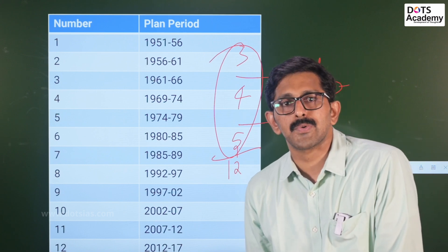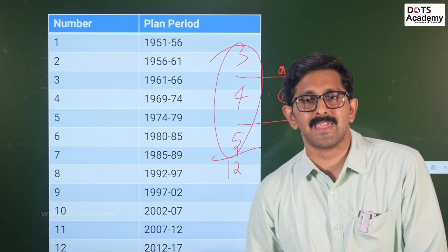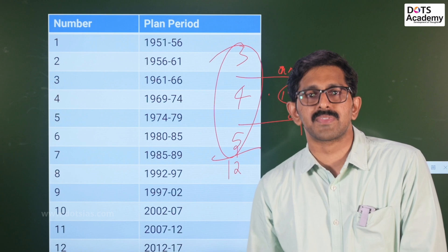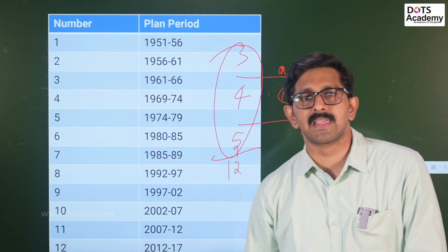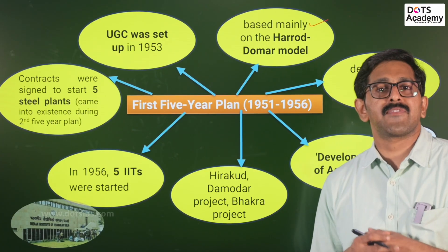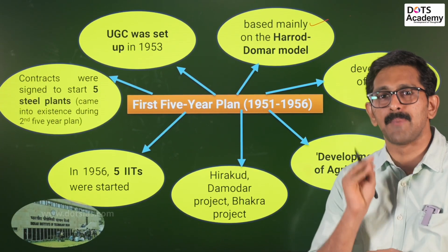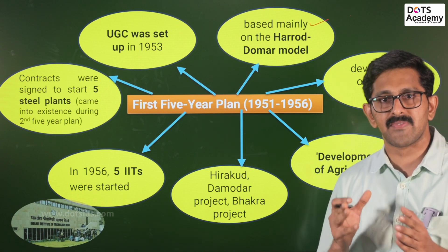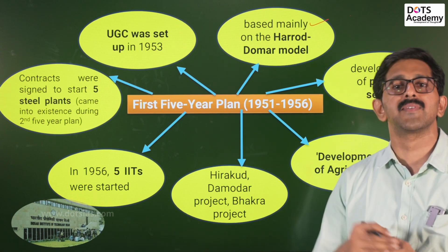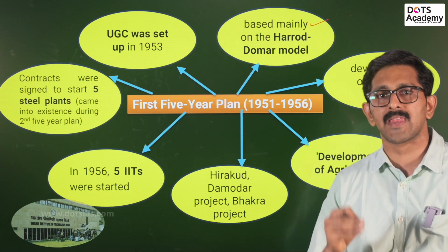From 1992 to 2017 is a chronological period to answer exam questions. We will try to answer questions. The first five-year plan in the period from 1951 to 1956 is important for most competitive exams.